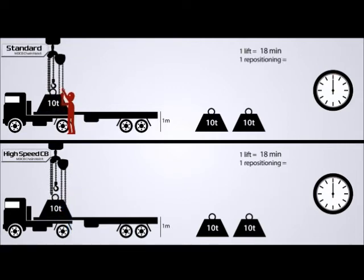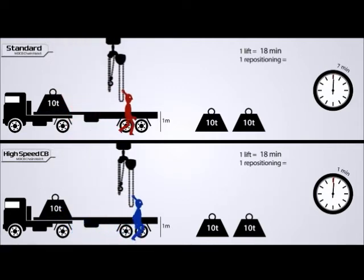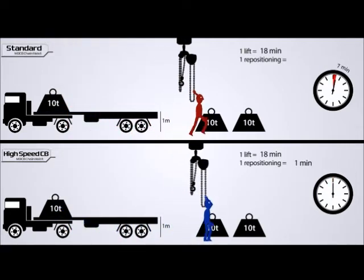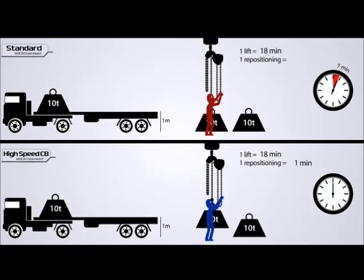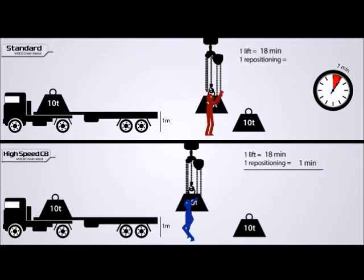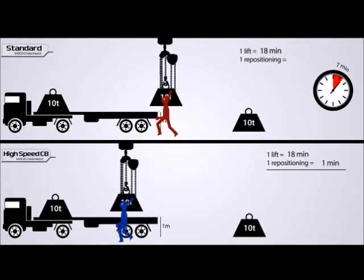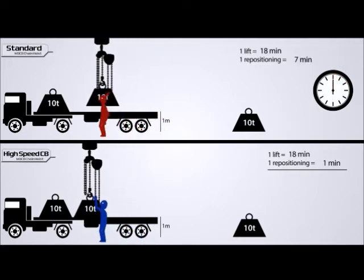In this illustration, the blue operator is able to reposition the unloaded hook in just one minute by activating the high-speed gear in the quick clutch equipped hoist. A procedure that takes the red operator over 7 minutes to do using a standard hoist.